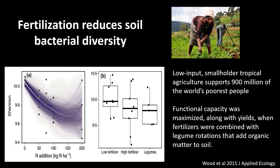In this work with low-input smallholder families and farmers in tropical environments — which supports over 900 million people, the majority of whom are women — we were able to identify that the functional capacity of the microbial system can actually be maximised, along with crop yields, by using a rotation system with legumes and a lack of tillage. By implementing those practices, we see an increase in diversity, an increase in functional potential of the microbial community, and an increase in yields.